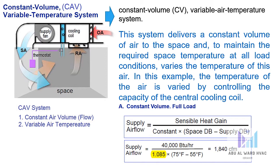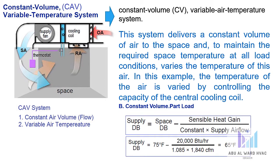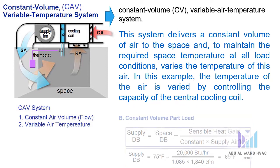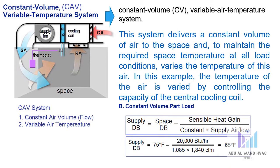In the full load condition, if we calculate the supply air according to the formula — sensible heat gain divided by a constant multiplied by Delta T — with a supply air temperature of 55°F, we get a supply air flow of 1,840 CFM. In the part load condition, we calculate the new supply air temperature according to demand. If the total sensible heat gain is 40,000 BTU at full load and drops to 20,000 BTU at part load, substituting into the formula gives a supply dry-bulb temperature that increases from 55°F to 65°F.